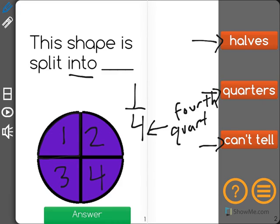Just like four quarters are equal to one dollar, four quarters make up one whole shape as well. So our correct answer here is quarters.